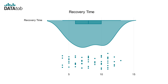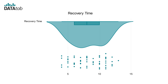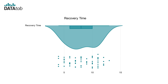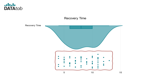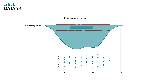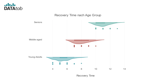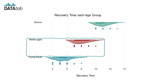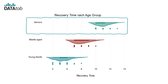The raincloud plot is particularly useful because it offers a holistic view of the data, allowing for the appreciation of the distribution's shape, the raw data points, and summary statistics all in one visualization. This can be especially helpful when comparing distributions across multiple groups or conditions.